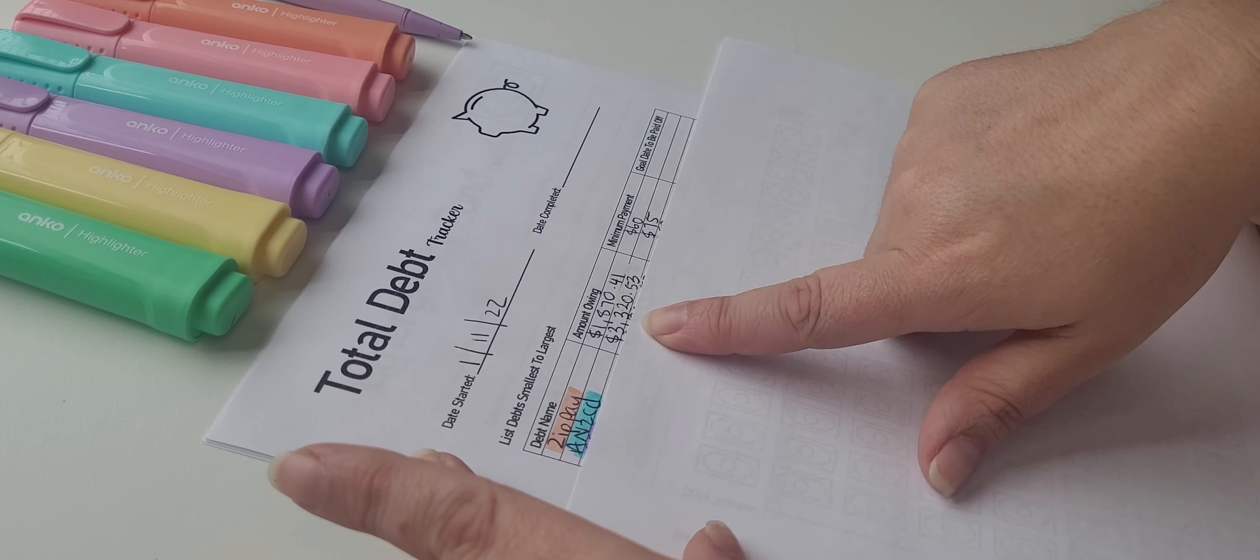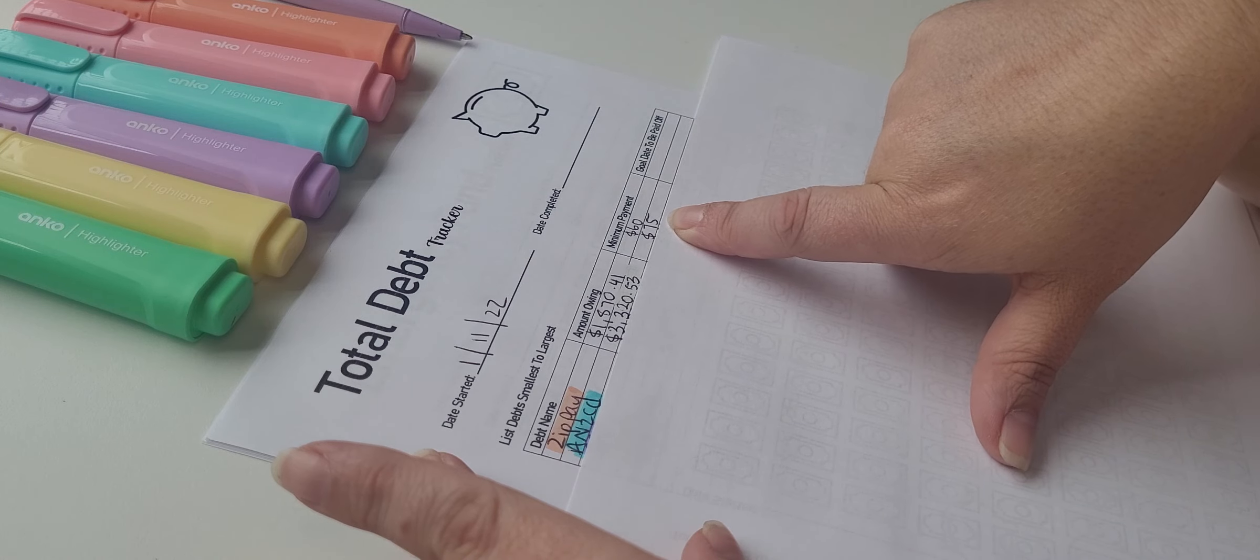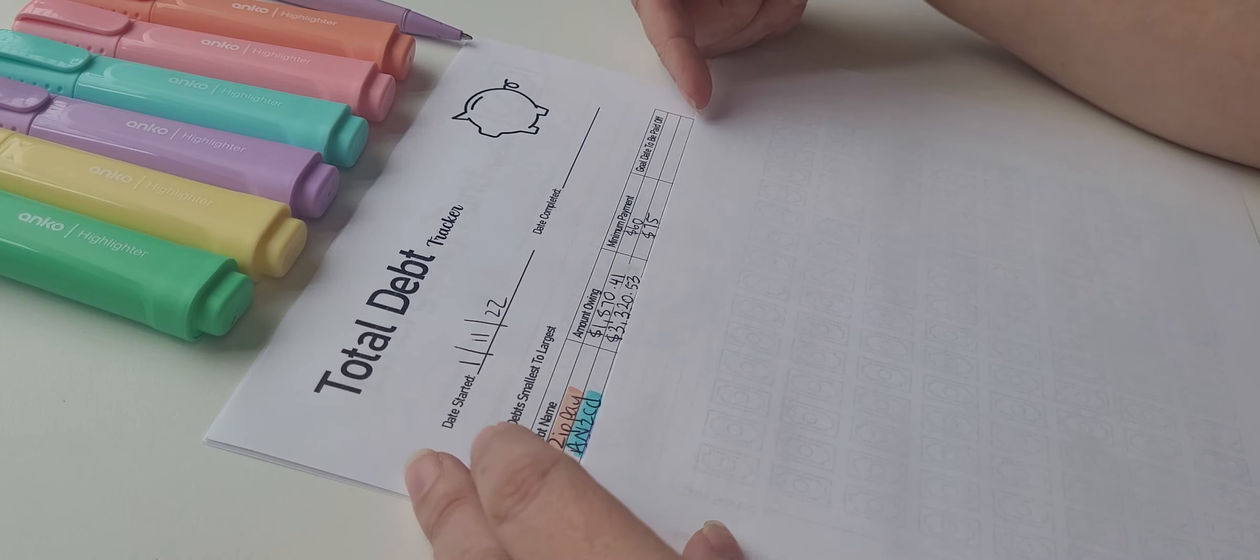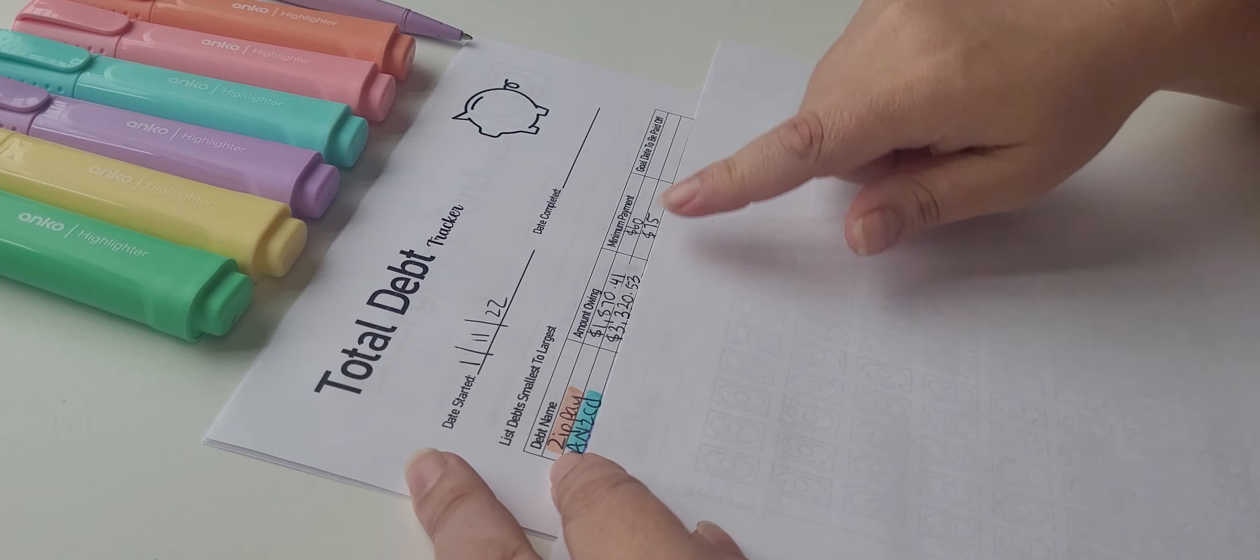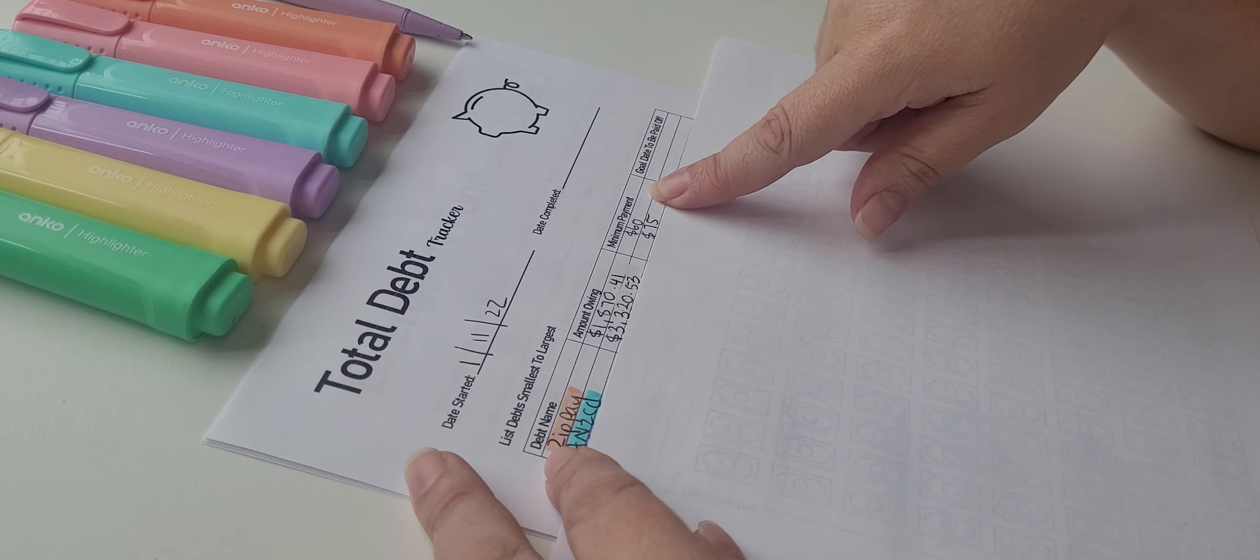Now I don't like to put goal dates to be paid off, but I know some people need a date. So I've added dates just in case anyone out there wants to purchase these trackers. ANZ credit card, $3,320.53. Our minimum payment is $75.